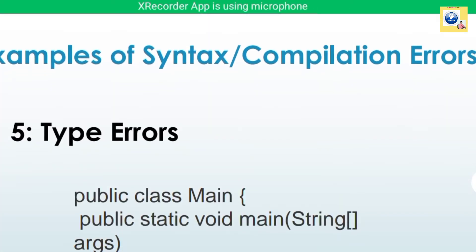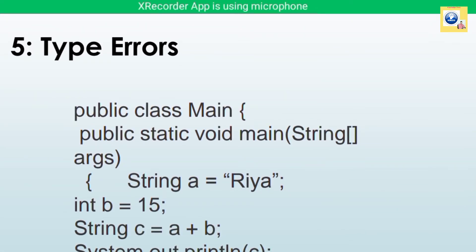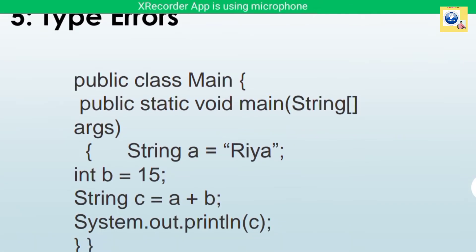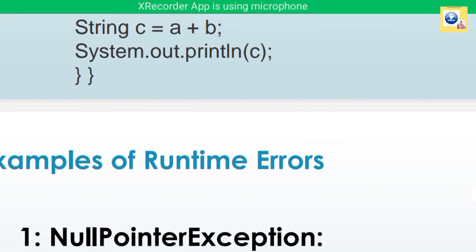Here is one more example: a type error. We have a string variable 'a' equal to 'Rhea', another variable of integer type, and we are trying to find the sum of the two. That creates a problem because a string cannot be added to an integer variable. This is what a type error is, and these were some examples of syntax errors.